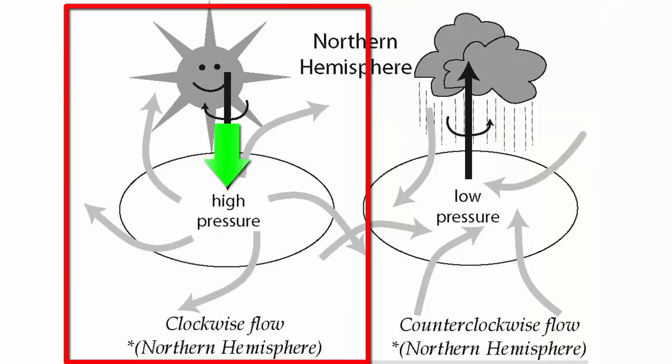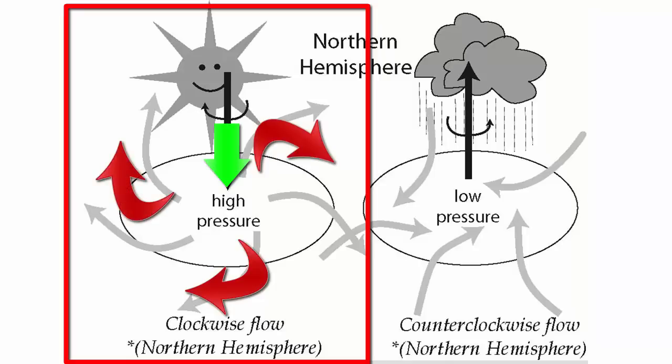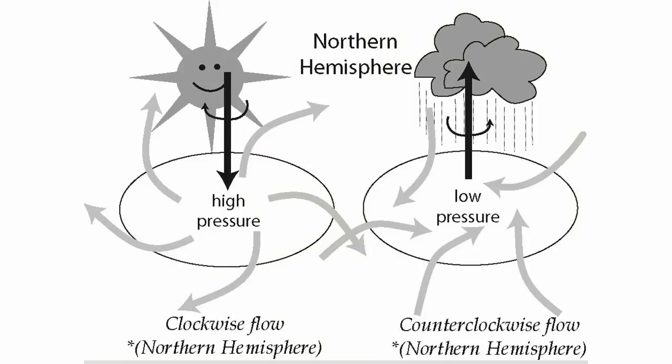The reverse is true for high pressure. As air moves away and is deflected to its right, the result is clockwise flow of air. This image also reminds us that the rising air that produces low surface pressure will cool, increasing its relative humidity and bringing rain. The sinking air that produces high pressure systems will warm, decreasing its relative humidity and bringing clear skies and dry conditions.